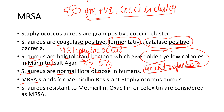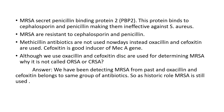Methicillin-resistant Staphylococcus aureus, abbreviated as MRSA, refers to any Staphylococcus aureus resistant to methicillin, oxacillin, or cefoxitin. MRSA becomes resistant by secreting penicillin-binding protein 2 (PBP2), which binds to cephalosporins and penicillins, inactivating the activity of those antibiotics. Therefore, MRSA is resistant to penicillins and cephalosporins.